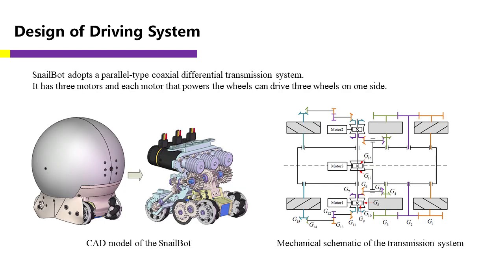Most existing six-wheel rocker bogey chassis, such as Lunar Rover, are driven by six motors, and the front and rear four wheels have separate steering motors. If SnailBot's drive system were also designed in a traditional way, it would have at least 11 motors, which would greatly increase the weight of the robot. In this work, we utilize a parallel-type coaxial differential transmission system to drive the robot.